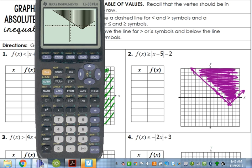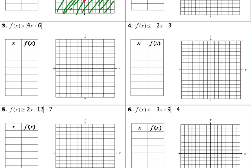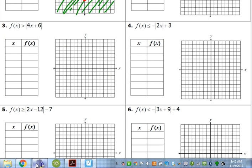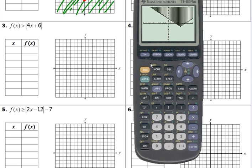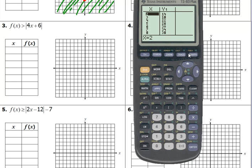Easy, right? We just got to know how to use our calculator. Let's look at number 3. Absolute value of 4x plus 6. It is greater than. It's not equal to. So that's what my graph should look like. Let's go to the table.